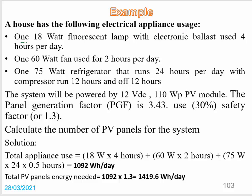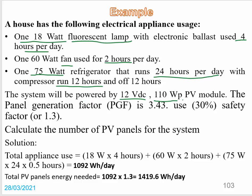Here we have an example. A house has the following electrical appliances: one 18-watt fluorescent lamp used 4 hours per day; a 60-watt fan used 2 hours per day; and a 75-watt refrigerator that runs 24 hours per day, but with the compressor running only 12 hours. So effectively, we treat the refrigerator as working for 12 hours. The system is powered by a 12V DC, 110-watt peak PV module.